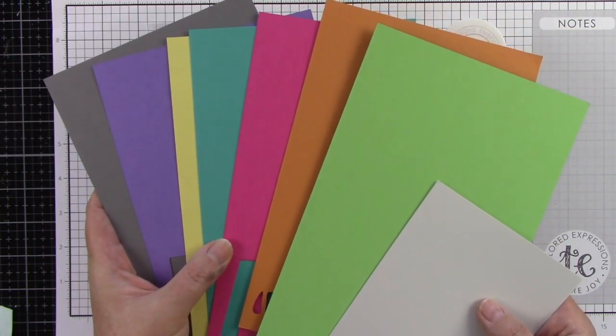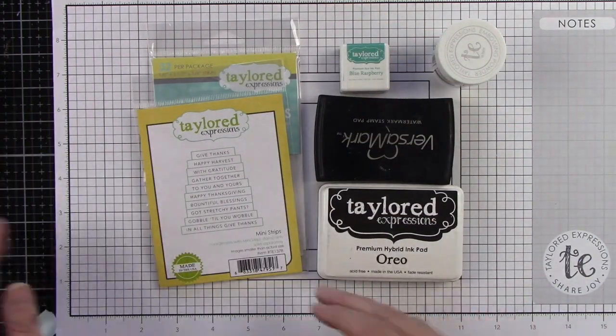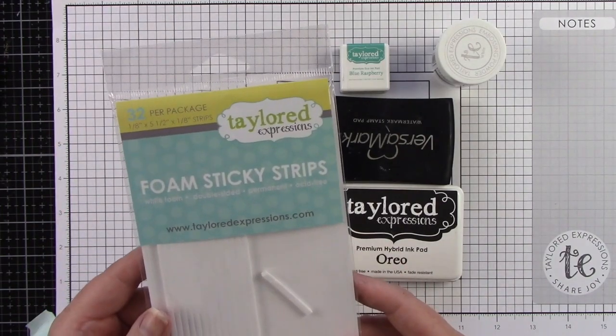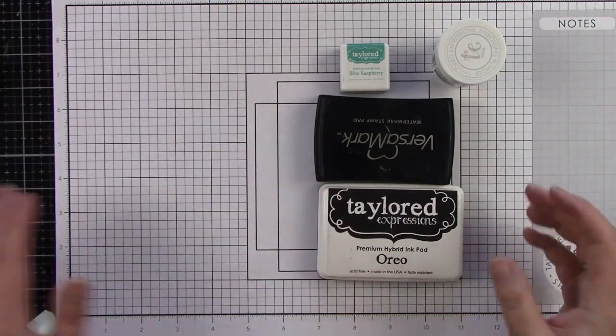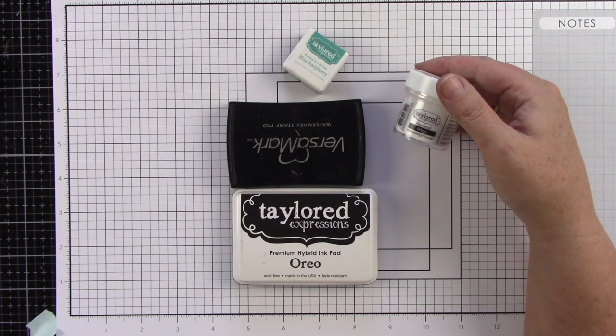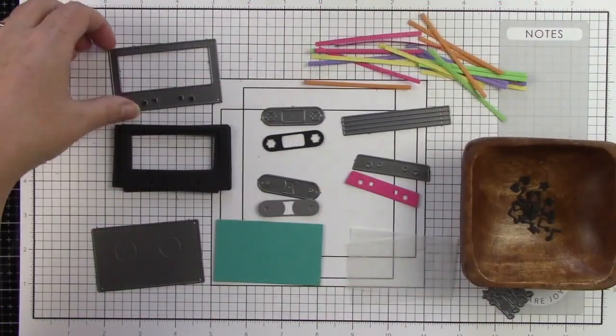For adhesives, I'm going to be using the mini strips die for the mini strips mixtape sentiments, foam sticky strips, blue raspberry ink, versamark ink, oreo ink, and white embossing powder.